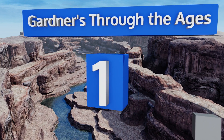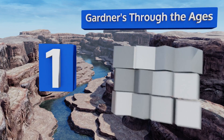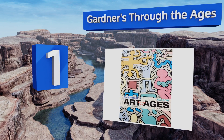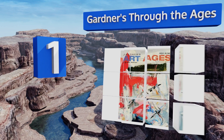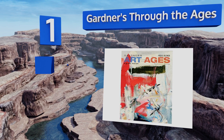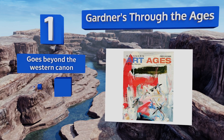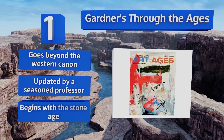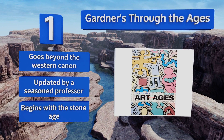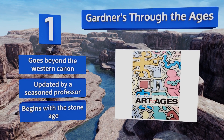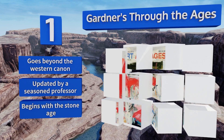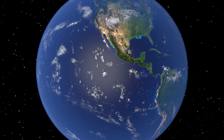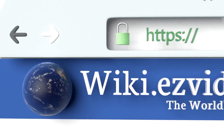Taking the top spot on our list, first published in the 1920s and now in its 14th edition, Gardner's Through the Ages is a thorough resource on global visual culture throughout history. Unique components include a scale that shows the real size of each piece and summaries at the end of each chapter. This one goes beyond the Western canon, has been updated by a seasoned professor, and begins with the Stone Age.